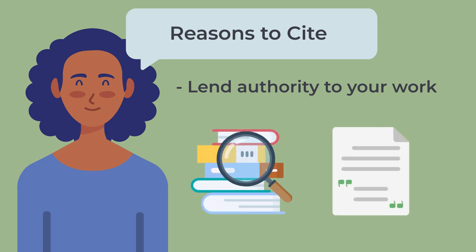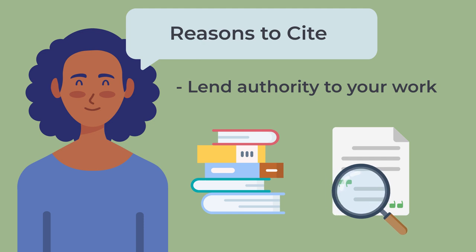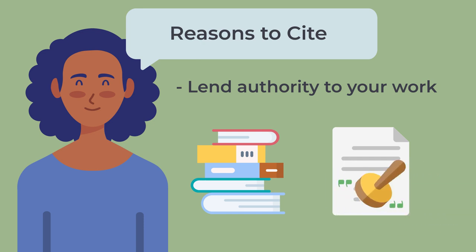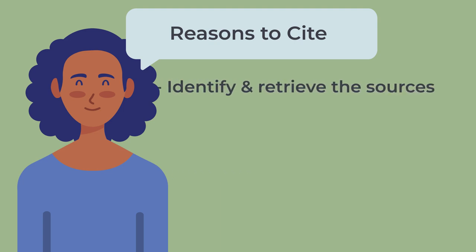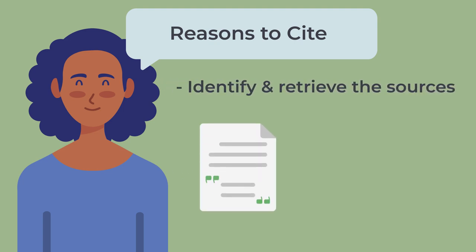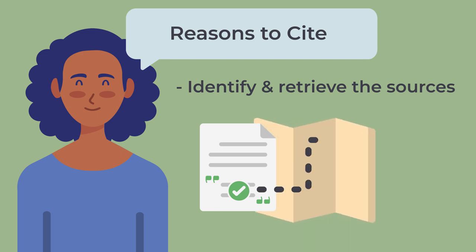When you cite reputable sources to support your statements, you're essentially saying, I'm not making this up — experts or credible sources back me up. This can make your argument more convincing. Another reason to cite is to help your reader identify and retrieve sources that you found and follow the path of your information to verify the sources you've used. Clear and traceable references provide the essential roadmap for others to explore, validate, and build upon the ideas and discoveries presented in your work.